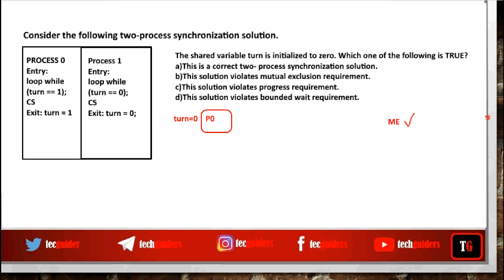What about progress? Suppose p0 is inside the critical section and turn equals 0. While exiting, p0 sets turn equals 1, meaning the next chance is for p1. But suppose p1 doesn't wish to enter the critical section, while p0 wishes to enter again. p0 cannot, because turn value is 1. For p0 to enter, turn must be 0, which can only be set by p1 while exiting. So a process in the remainder section is blocking another process from entering the critical section — progress is not guaranteed.